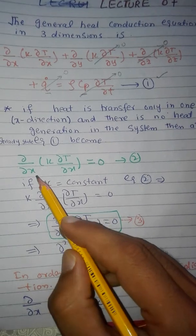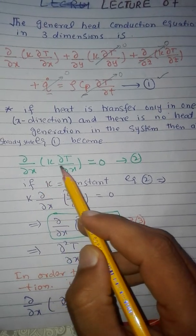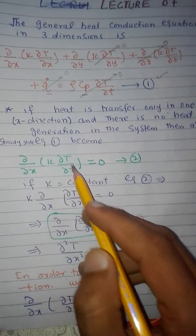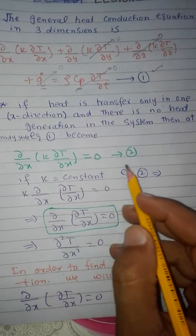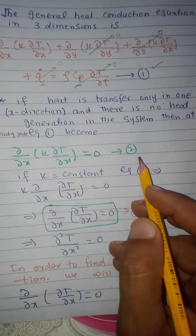This is the simplified form of the above equation, which is: partial by partial x of k times partial T by partial x equals zero. This is equation number 2.